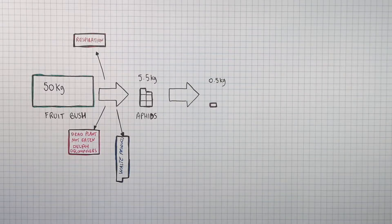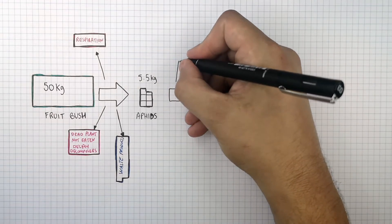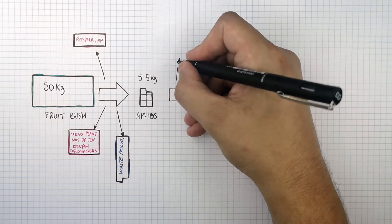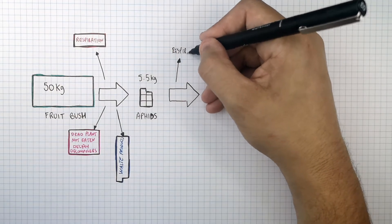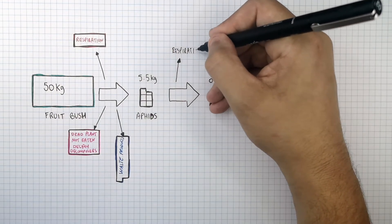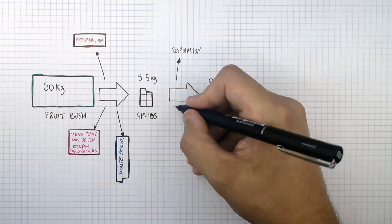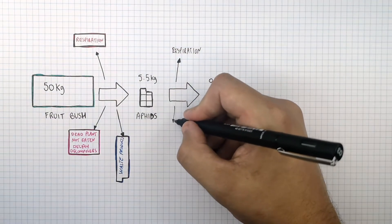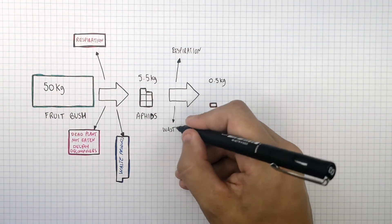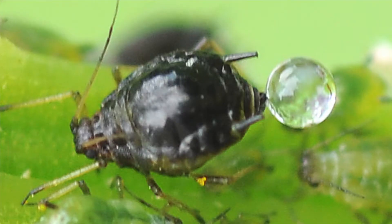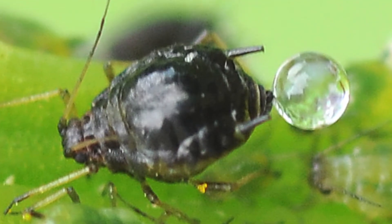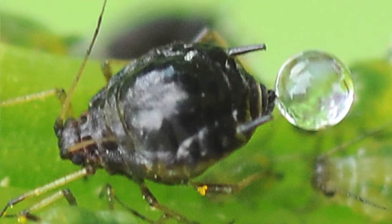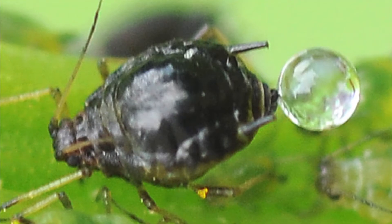So where does the remaining energy get transferred to? Energy stored in the biomass of the aphids is transferred to the surroundings due to cellular respiration being transferred by heating. Aphids also excrete waste — aphids produce something called honeydew, which other insects like to eat. This picture shows an aphid excreting honeydew, its waste product.